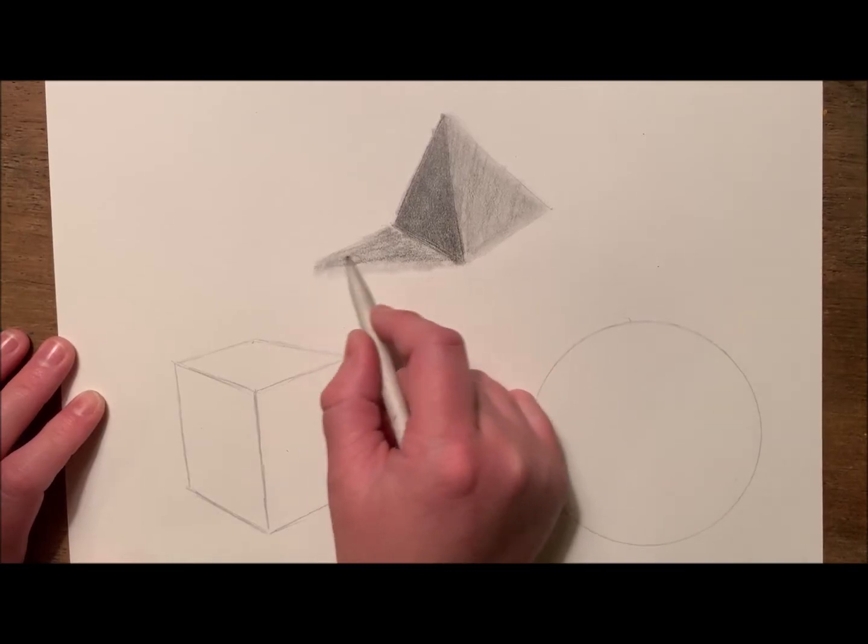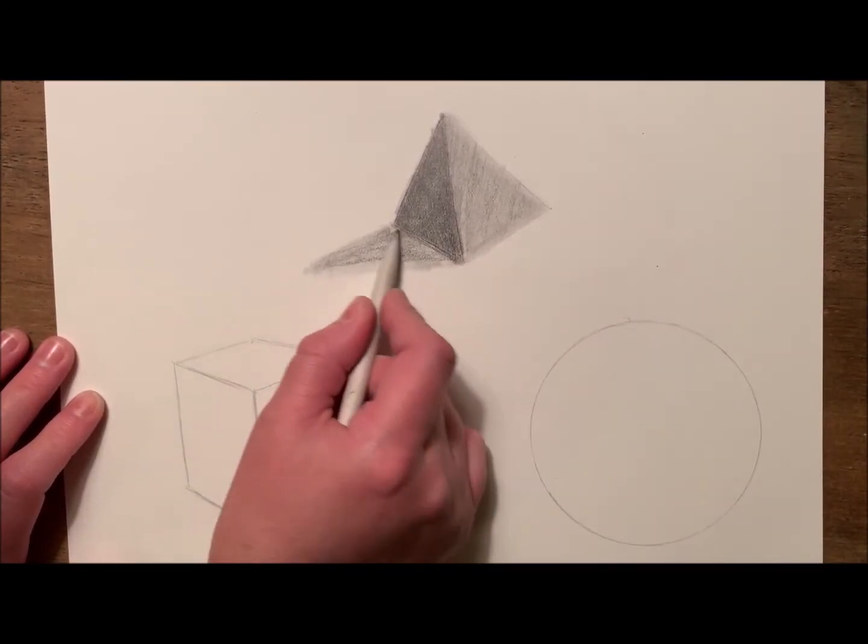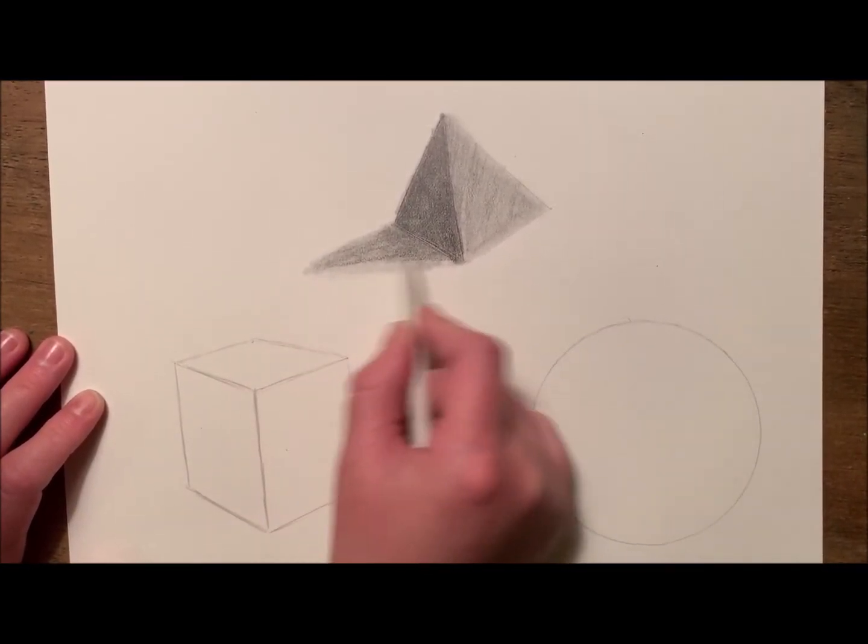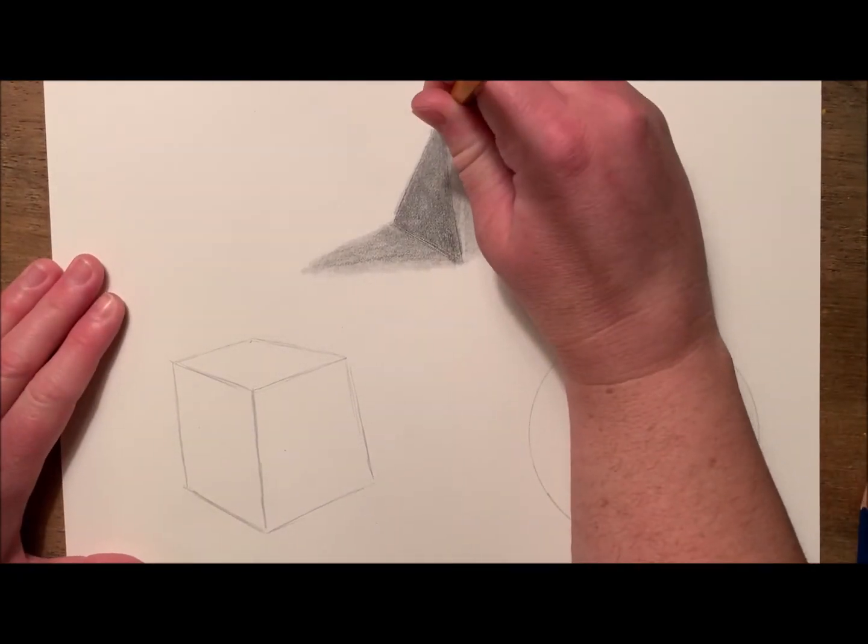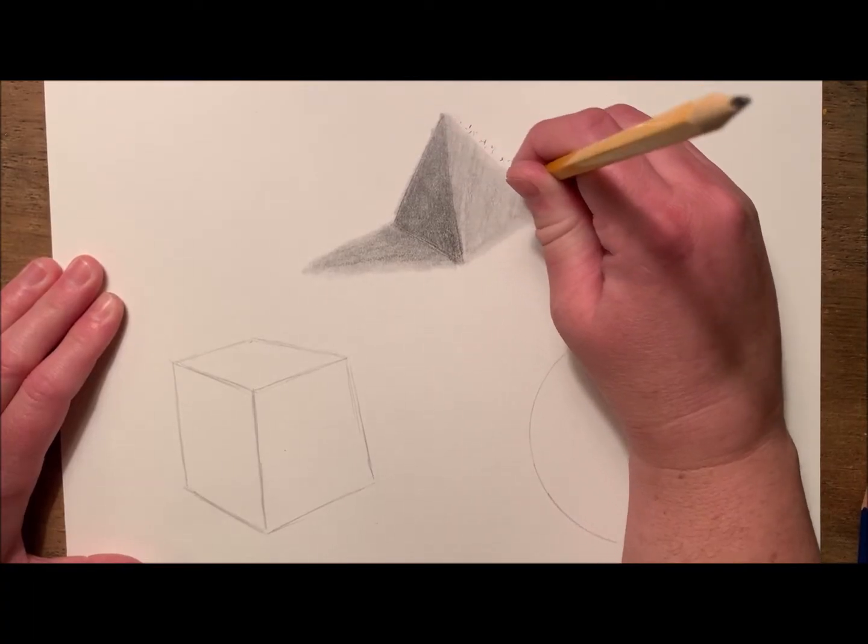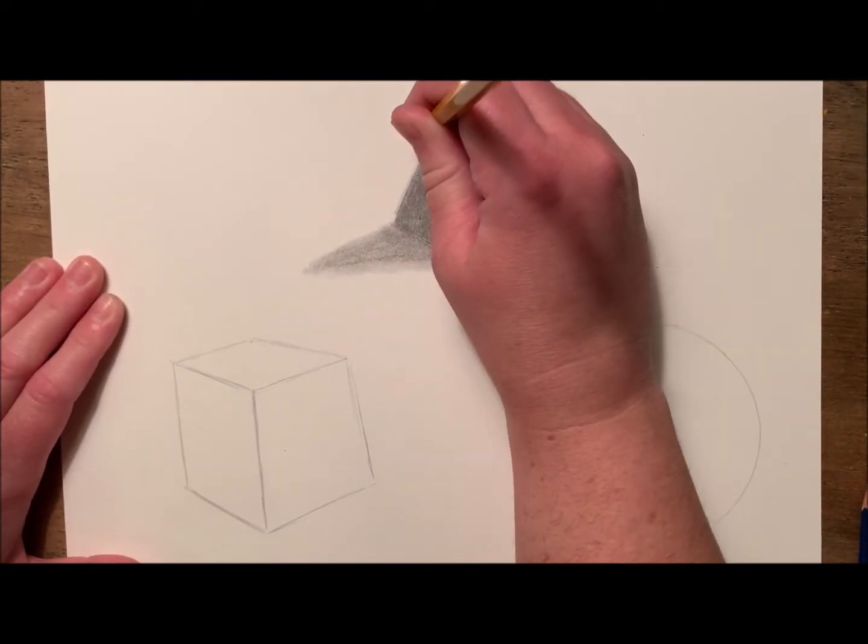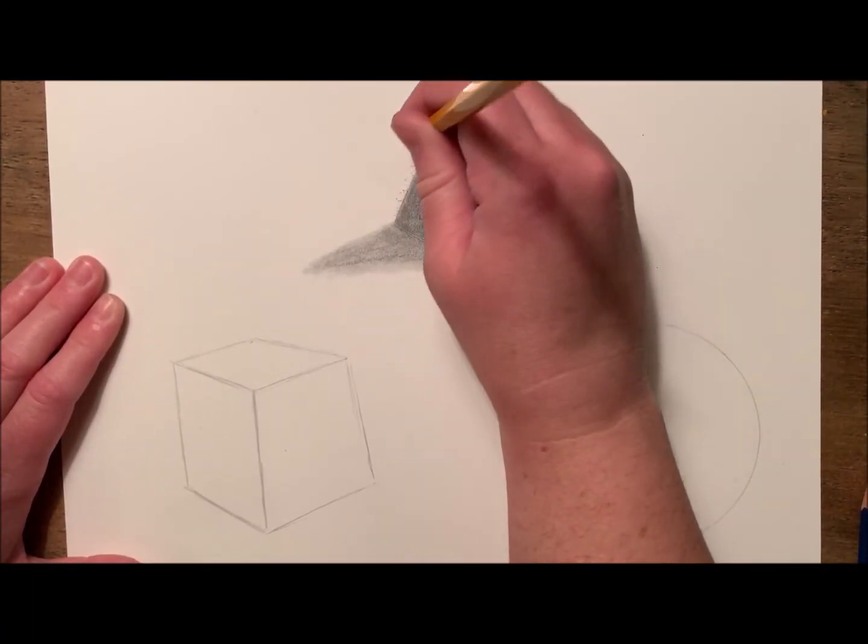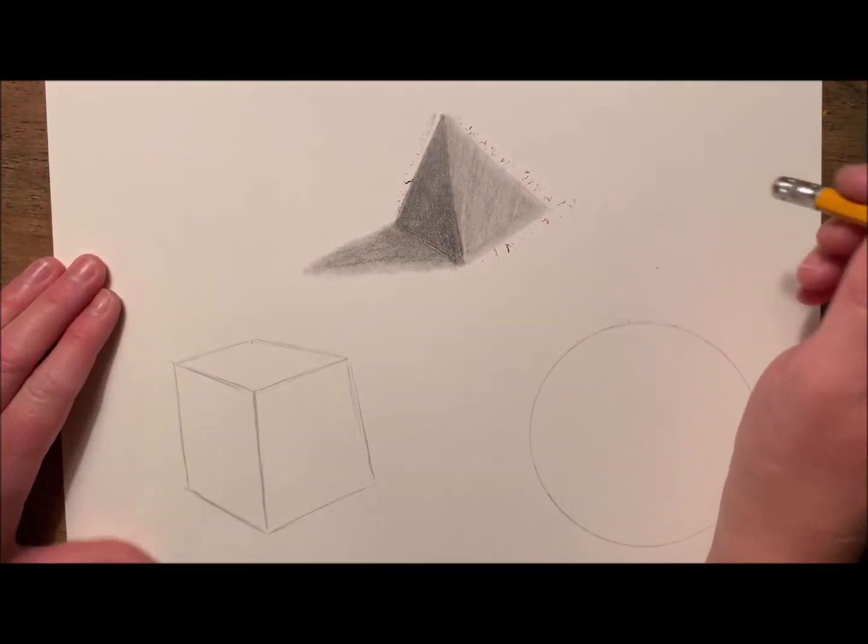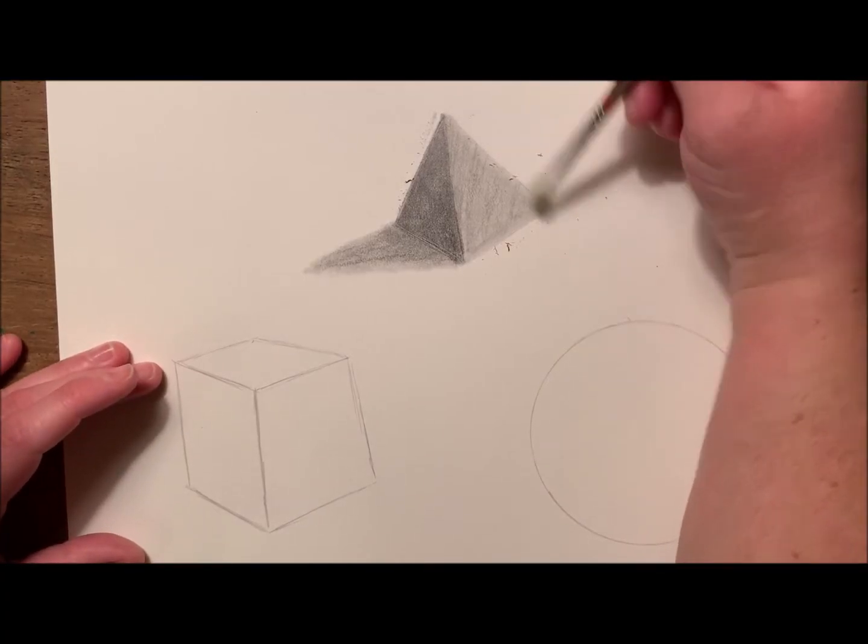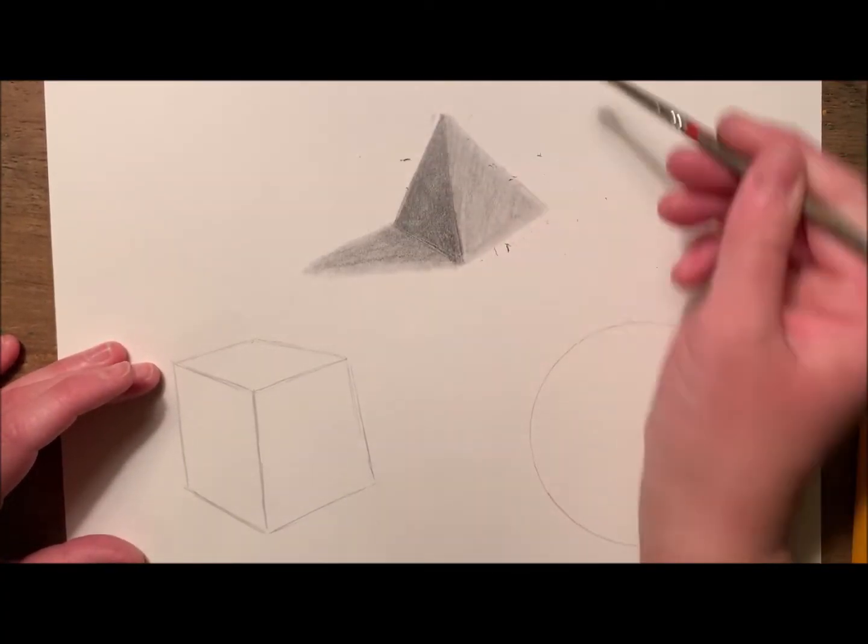The next step is to use an eraser and sharpen up what I have over-blended. So using my eraser to make straight solid lines along the edge of my pyramid, I'm going to actually use a paintbrush to wipe away my shavings so I don't have any smudges or smears.